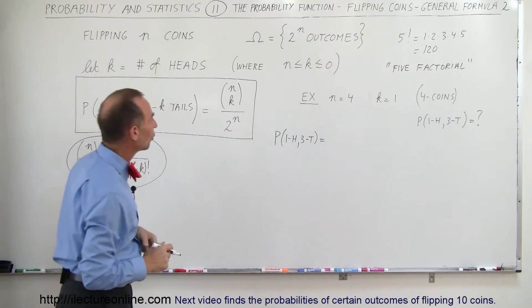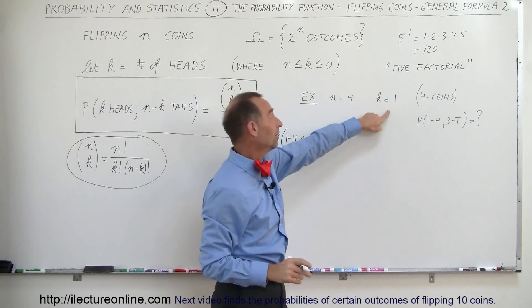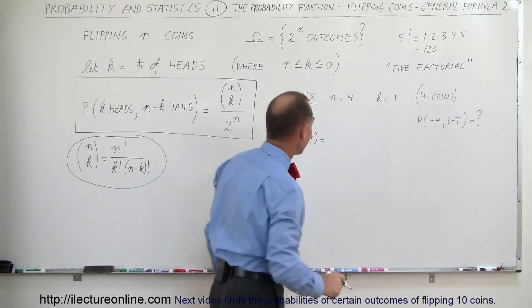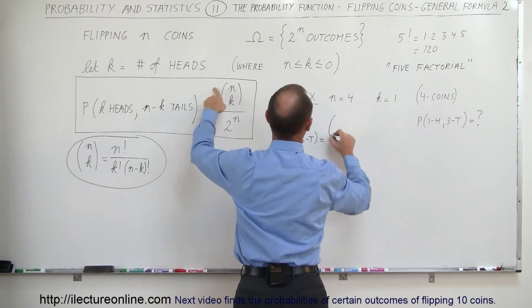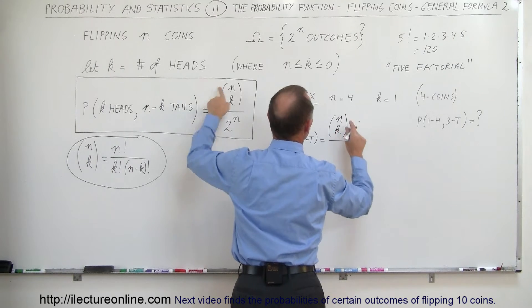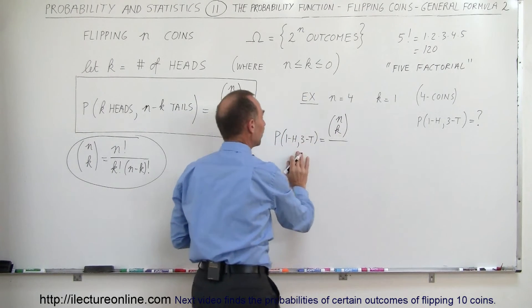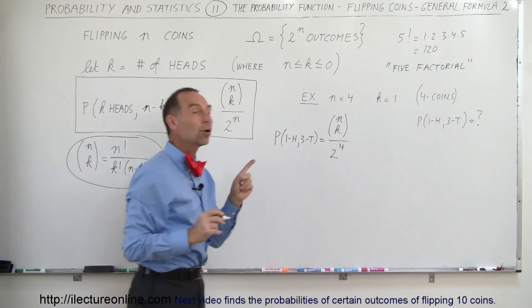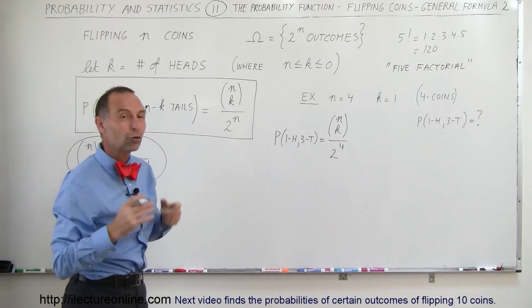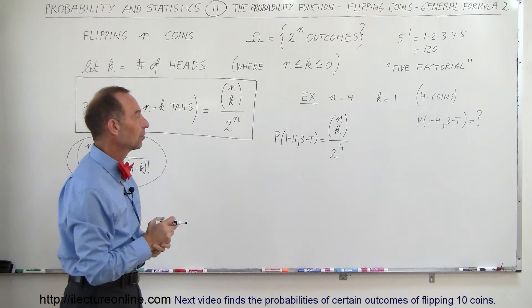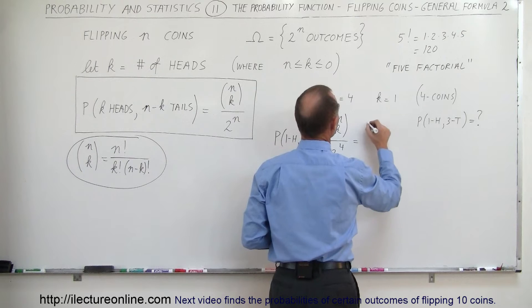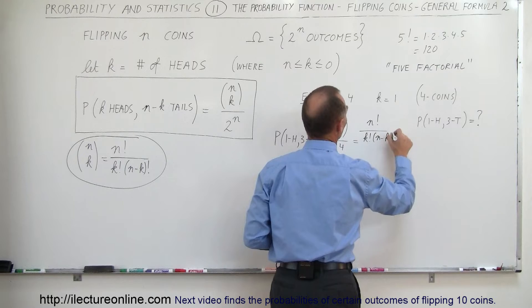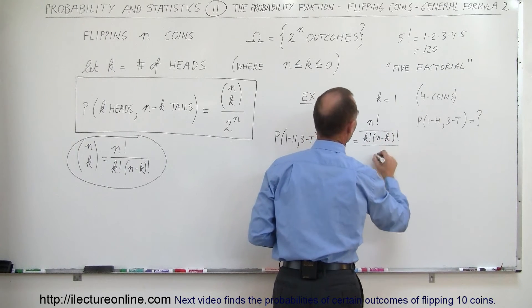In this case, notice that n is equal to 4 and k is equal to 1. 4 coins and k equals 1 represent the number of heads. So it's going to be this symbol n, k - that's the number of outcomes for this particular event - divided by 2 to the 4th power, because we know that n is 4, 4 coins, for the total number of outcomes in the sample space.